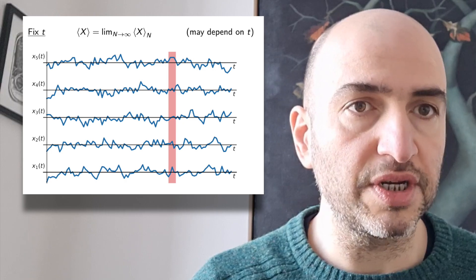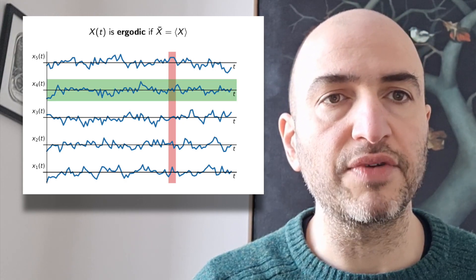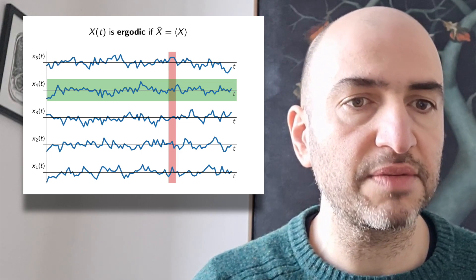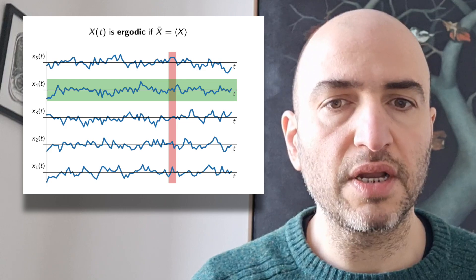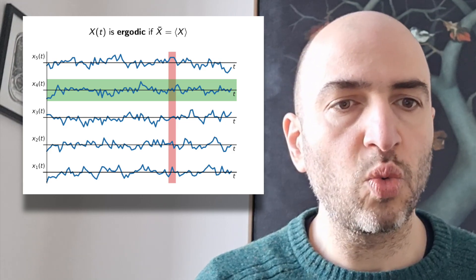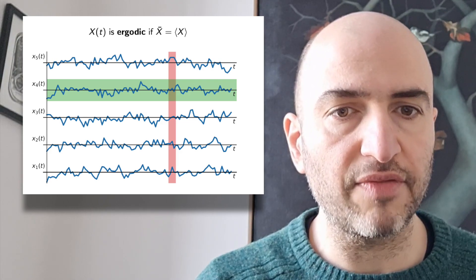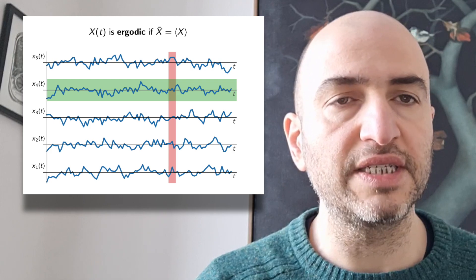The ergodicity question is really very simple: are these two averages equal? If they are, then we say that the stochastic process, the X of t, is ergodic. In other words, a stochastic process is ergodic when the operations of taking an average along a single long trajectory and taking an average at a fixed time over many different trajectories are equivalent. Now, the time average and the ensemble average are conceptually different operations. The time average is informative of a single system over long time, and the ensemble average is informative of an aggregate of systems.